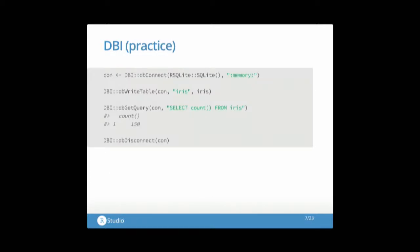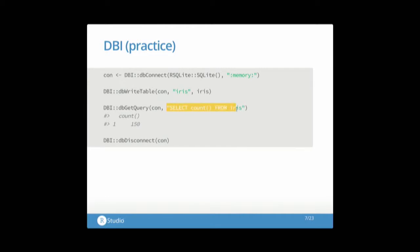In practice, DBI looks like this. You create a connection by calling dbConnect — in this case I'm creating a connection to a SQLite database in memory. You can write a table, you can run a query using SQL right here, so you need to be a little bit fluent in SQL. And when you're done, you need to disconnect your connection, which is very important — if you forget to do this and you're creating a lot of connections, you will actually leak connections. The gist of it is pretty simple.